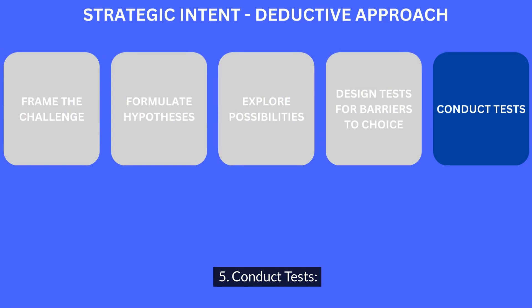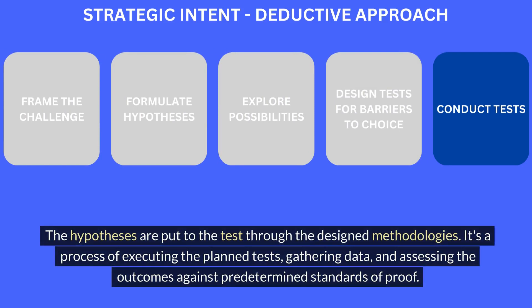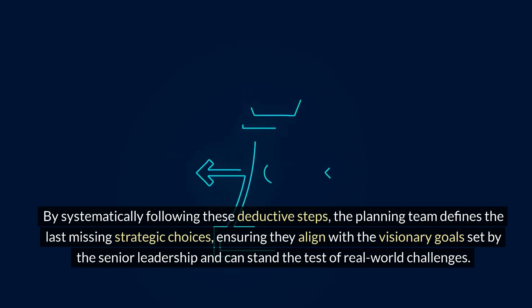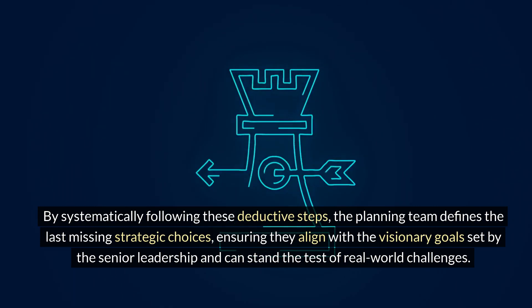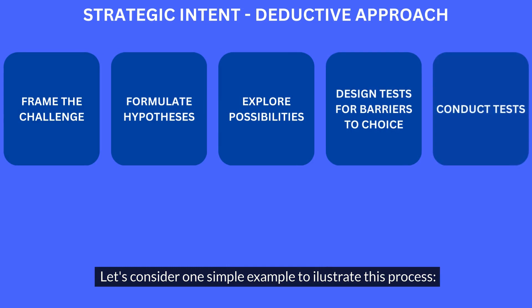Step 5: Conduct tests. The hypotheses are put to the test through the designed methodologies. It's a process of executing the planned tests, gathering data, and assessing the outcomes against predetermined standards of proof. By systematically following these deductive steps, the planning team defines the last missing strategic choices, ensuring they align with the visionary goals set by senior leadership and can stand the test of real-world challenges.